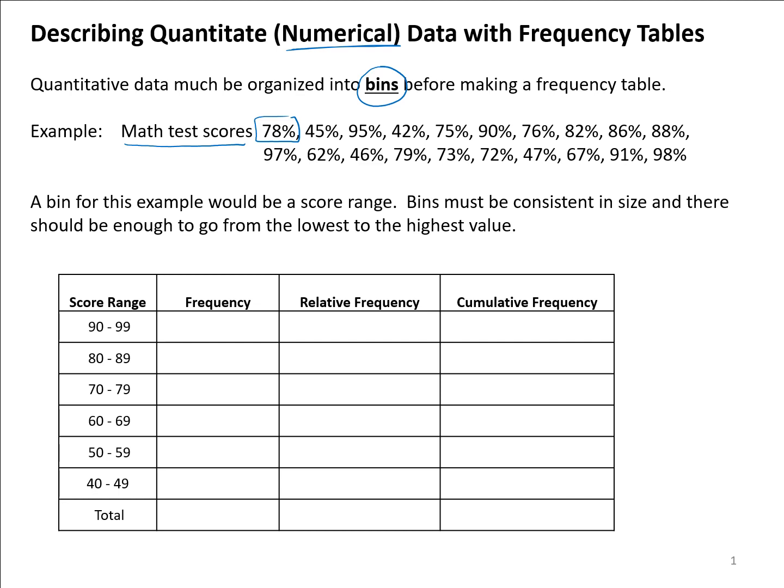Those bins for a math test might be the score range. You want to make sure that the bins you create are consistent in size. For instance, if you decide to have a score range of 90 to 99, you would want to make all of your other score ranges be that same width of 10 units, so 80 to 89, 70 to 79.